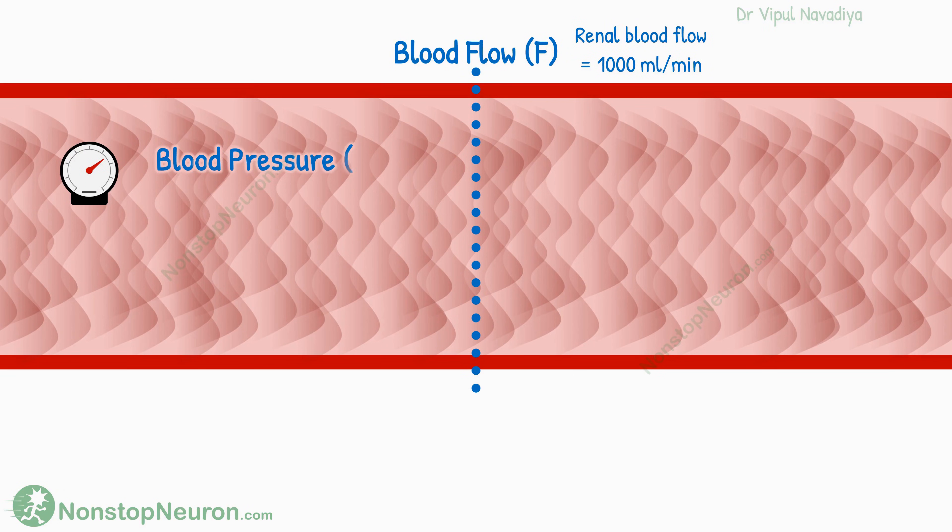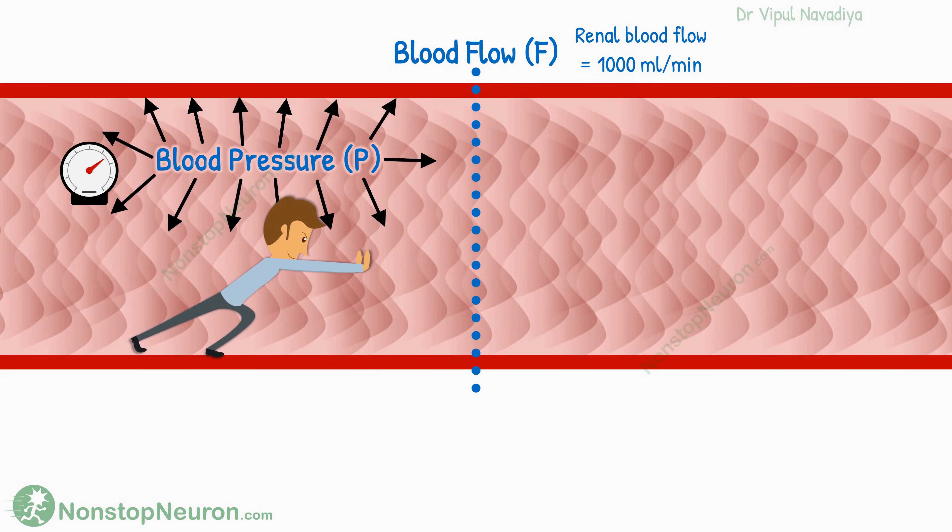Blood pressure is the force exerted by blood against the vessel wall. High pressure at one end of the artery tends to push the blood. And resistance is the force opposing the blood flow. It depends on the viscosity of the blood, the length of the blood vessel, and the radius of the vessel.